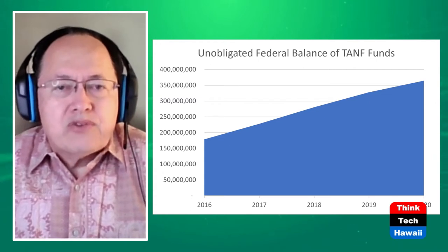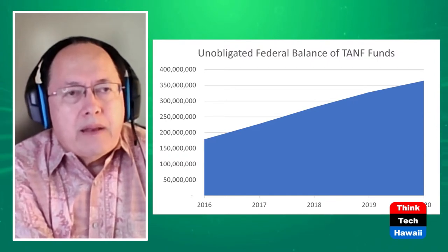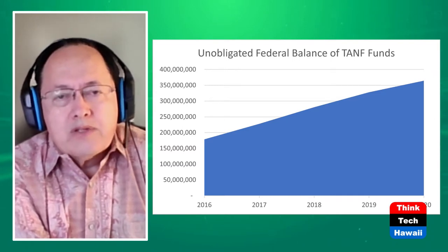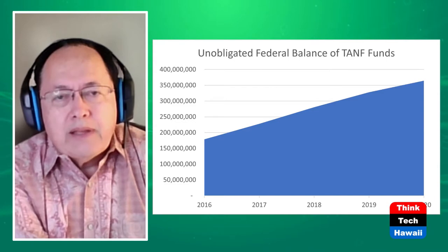What does "unobligated" mean? That means it's sitting in some federal account, earning interest for the feds and not doing anything for us. Have we spent sufficient MOE to justify getting the whole $100 million? Yes, we have — and there are very substantial penalties if we don't make the MOE. But what's been happening is that the balance has been building up and building up. So that in 2021, as Hawaii News Now reported, we crossed the $400 million mark of money available to the state of Hawaii that is sitting somewhere else.